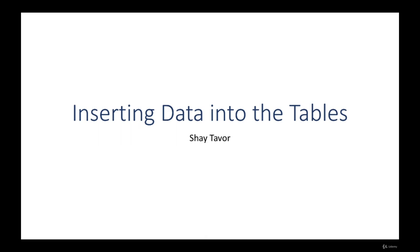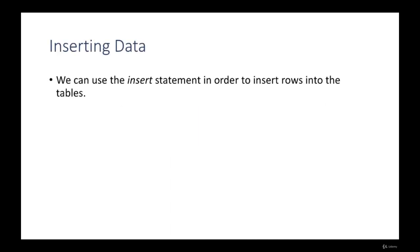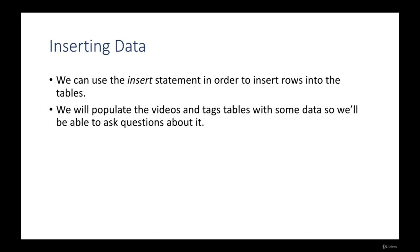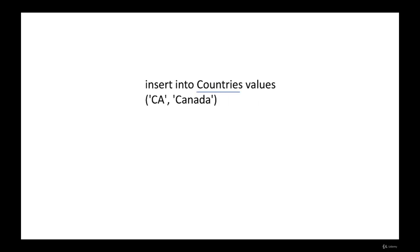In this lecture we'll continue and show how to insert data into the tables we created. We use the INSERT statement to insert rows into the tables. We will populate the videos and tags tables with data so we can ask interesting questions. The INSERT command looks like this: we start with INSERT INTO keywords, then the table name, then the keyword VALUES, then in brackets we write the values of the new row we want to insert. The values must contain all the columns in the row and in the original order they appear in the table.